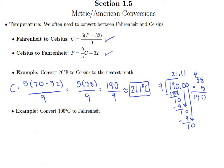Now let's take a look at our next example. Convert 100 degrees Celsius to Fahrenheit. As an FYI, 100 degrees Celsius is the boiling point of water, so we're going to find out what the Fahrenheit boiling point of water is.